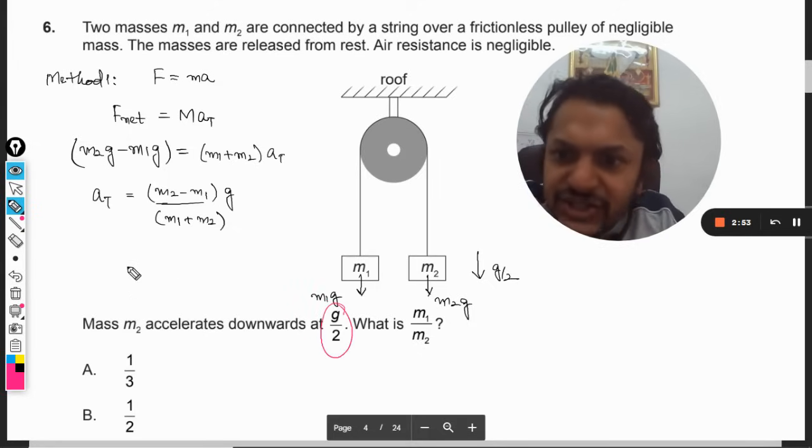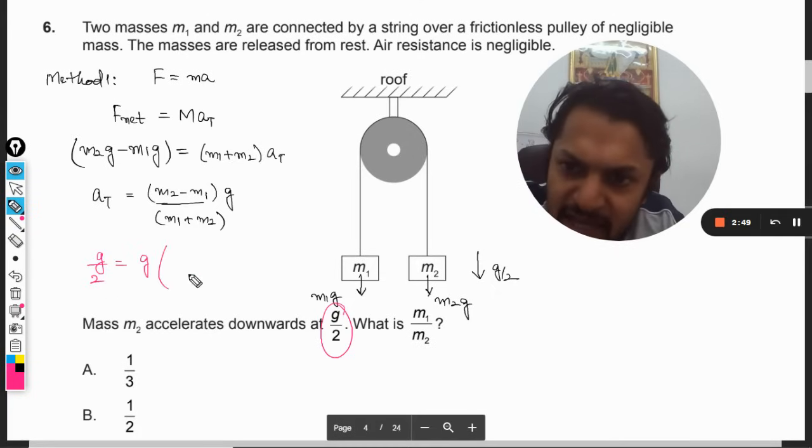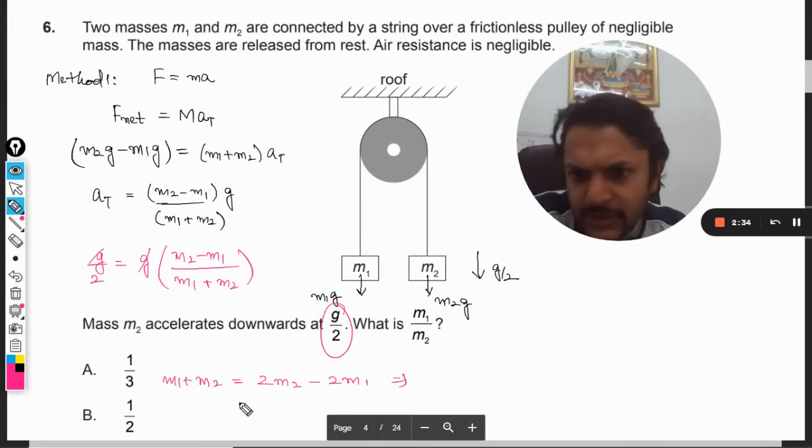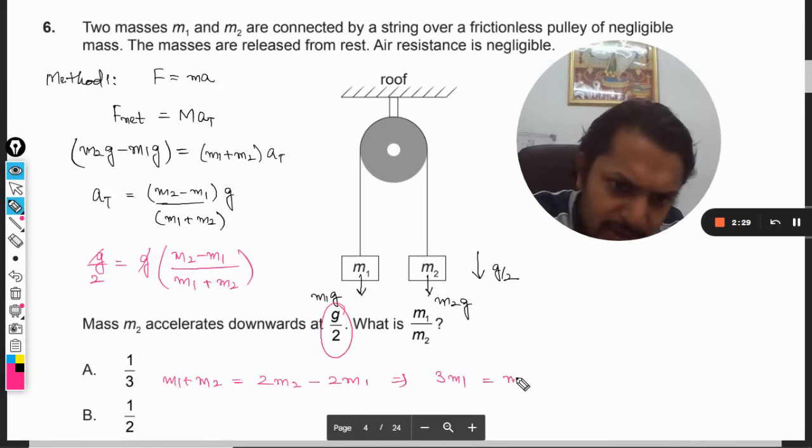So this becomes the total acceleration of these bodies. Now in our question, this total acceleration is given as g/2. So by solving this, I would be able to find the ratio. m1 plus m2 equals twice of m2 minus twice of m1. So on solving, 3m1 equals m2.